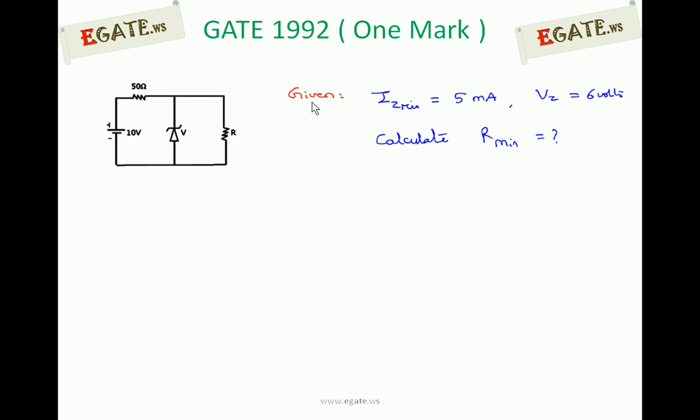This is the given circuit. The Iz minimum, i.e., knee current of Zener diode, is also treated as minimum Zener current required to keep the Zener diode working as voltage regulator. So Iz minimum equals 5mA, Vz equals 6V. We need to calculate R minimum.